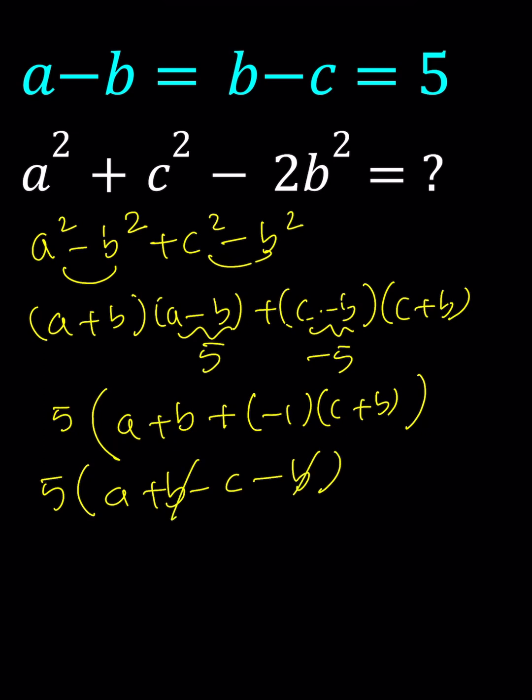b cancels out. 5 times a minus c. Since a minus c is 10. How do you know that? If you add a minus b and b minus c you get a minus c which is 5 plus 5, and that's equal to 10. So the answer would be 50.